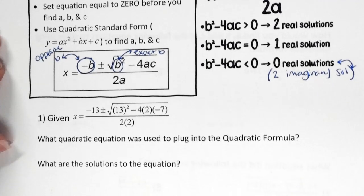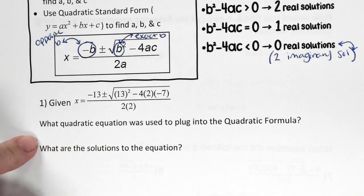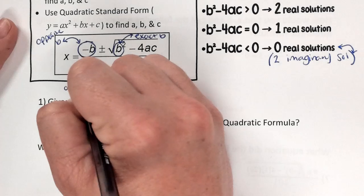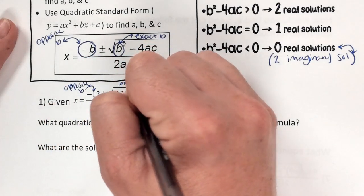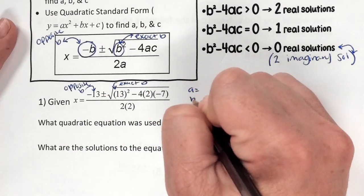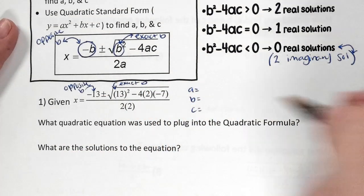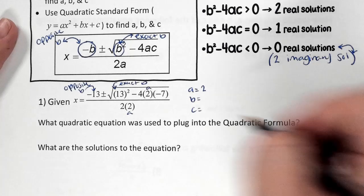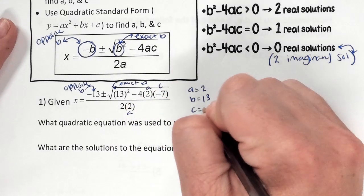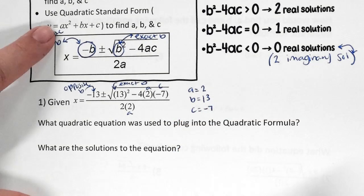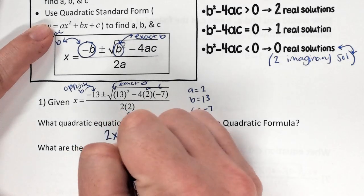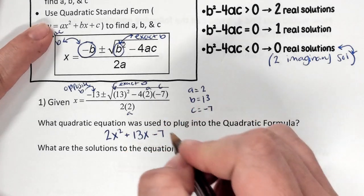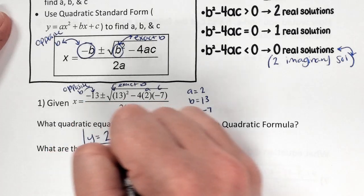For number one, the equation is already plugged in. We need to figure out what quadratic equation was used. Remember, this term is opposite B and this term is exact B. We need to find a, b, and c. We have a in two places. B is positive 13. So the equation is 2x² + 13x + (negative 7), which is what we plug into the quadratic formula.